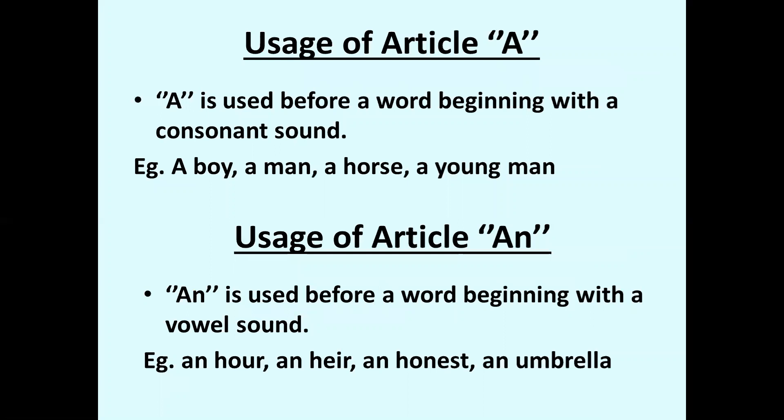Let us see the usage of article A. A is used before a word beginning with a consonant sound. We know that consonants are 21 and there are five vowel letters: A, E, I, O, U. For example, 'a boy' — B-O-Y — before 'oy' there is the letter B, which is a consonant letter. In the same way, 'a man' — M is a consonant letter.